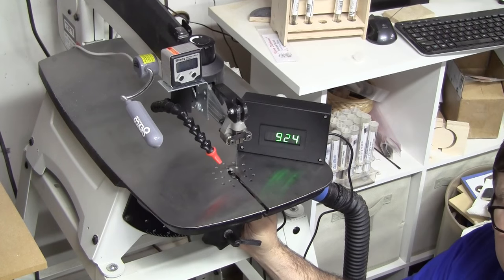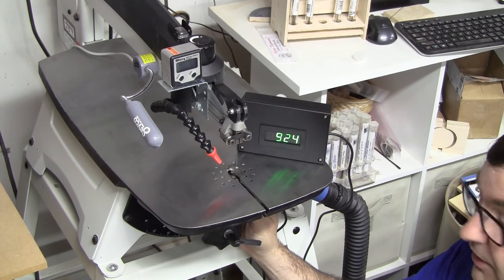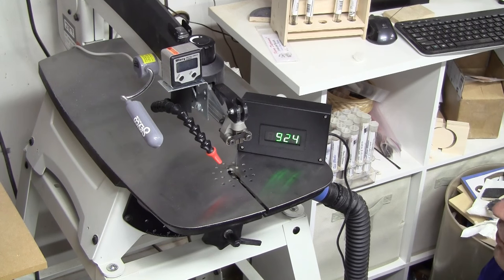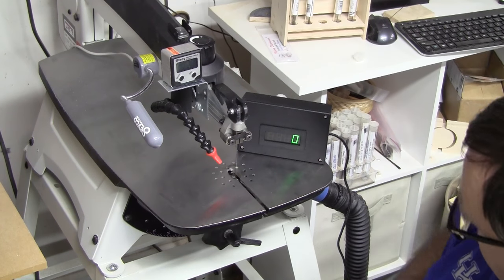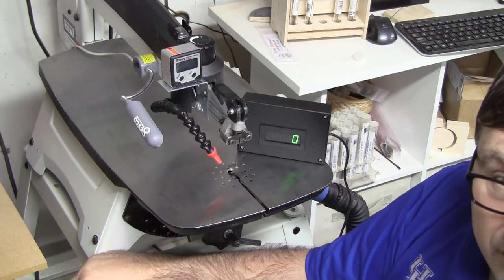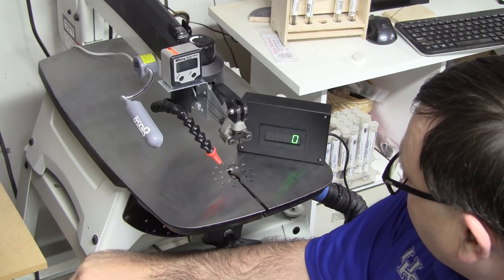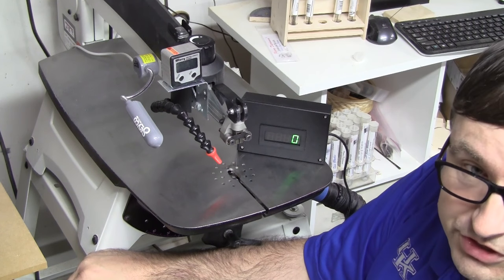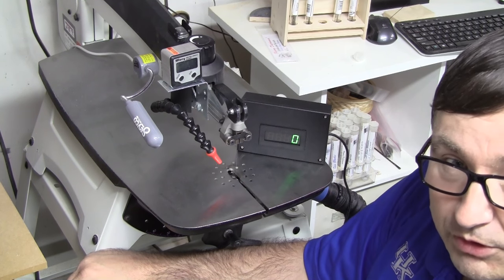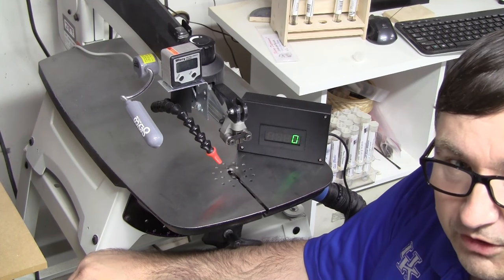So obviously what this is, it's a digital readout for your scroll saw that will show you how many strokes per minute you have it adjusted to. Now I can't tell you this is the most useful gadget that I've ever come up with, but it was a fun little project. You can put this whole thing together for probably around $30. It's a cheap project, it's easy to build.